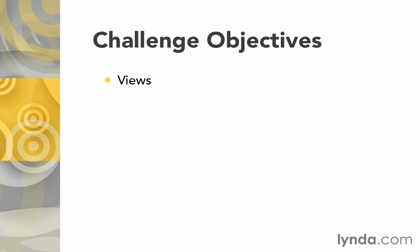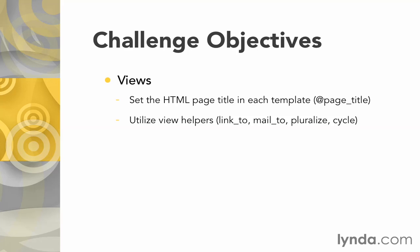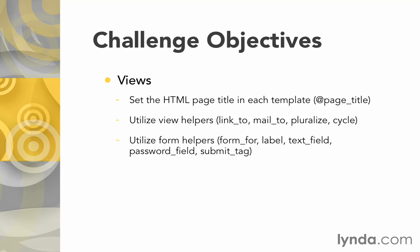Once your controller is done, we'll be ready to shift over to the views. You can copy and paste a lot of the HTML we've used earlier. Make sure that you set the HTML page title in each template using @page_title, and try to utilize some of the view helpers we learned: link_to, mail_to, pluralize, and cycle are all ones you can make good use of. Also utilize the form helpers we learned: form_for, label, text_field, password_field, and submit tag all have a role to play here.